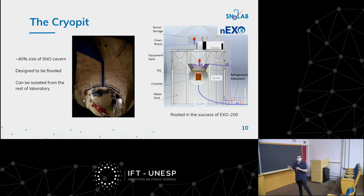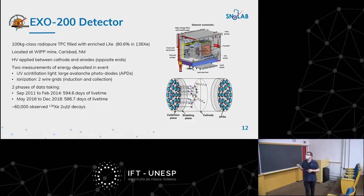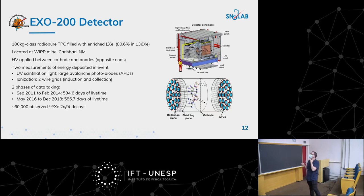nEXO is rooted in the success of EXO-200. EXO-200 is the existing past-generation experiment - we stopped taking data in 2019. The idea was to test liquid xenon technology to search for neutrinoless double beta decay; EXO-200 was the first to measure double beta decay with two neutrinos in xenon-136. EXO-200 is a vessel with liquid xenon. In the middle we place a cathode with high voltage applied. At the ends there are crossed wire planes acting as the anode, with photosensors behind them. It was located in WIPP, a salt mine in Carlsbad, New Mexico, at 650 meters depth.